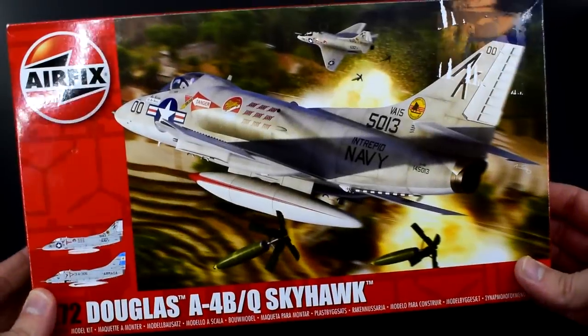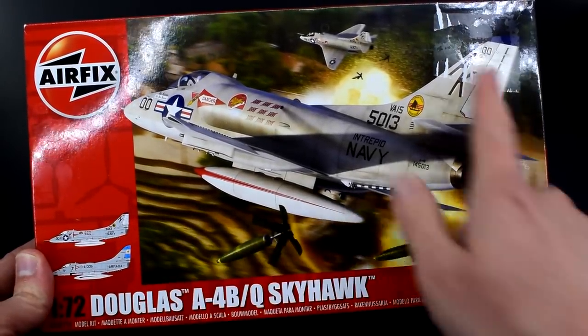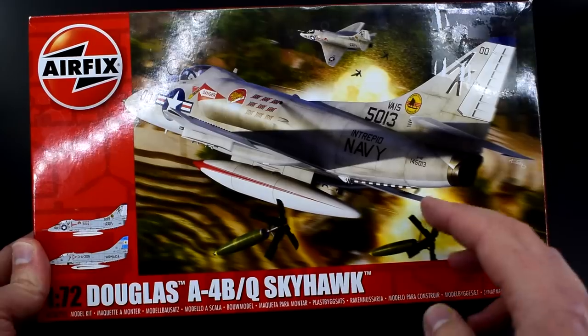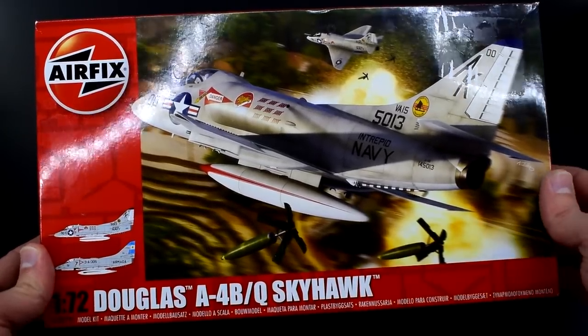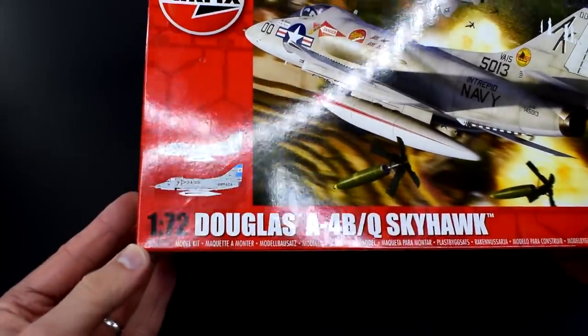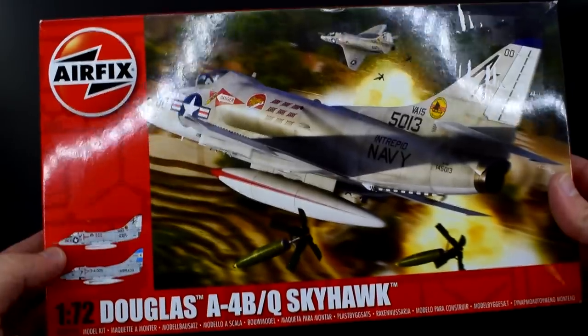On the front cover here, we've got the indication that there are two different paint schemes and this rather exciting image of the Skyhawk being used in combat dropping some of its ordnance. Down here we've got item code A03029A. On the back we've got nothing. This is one of the slightly larger kits from Airfix and they don't put any printing on the back.